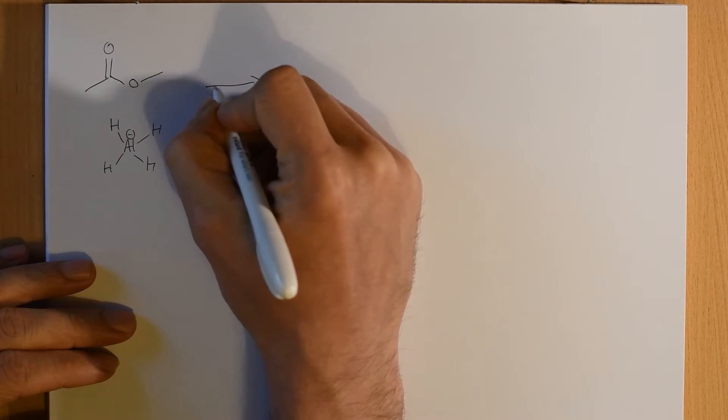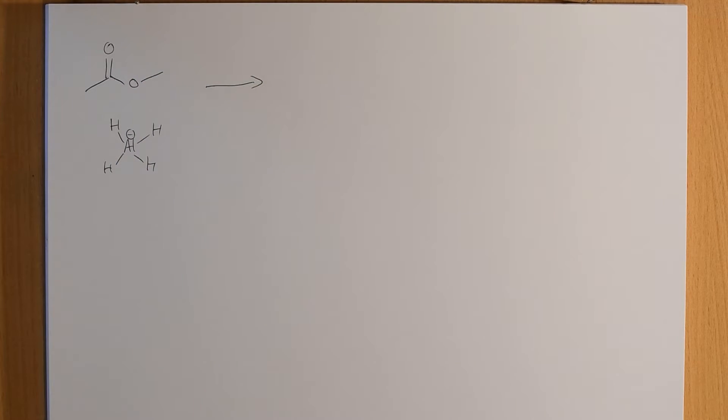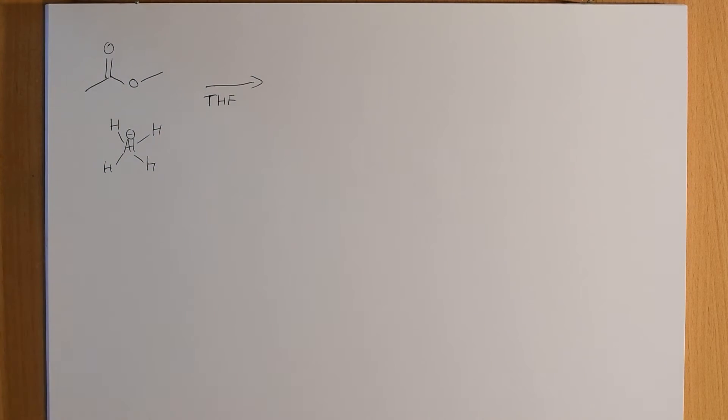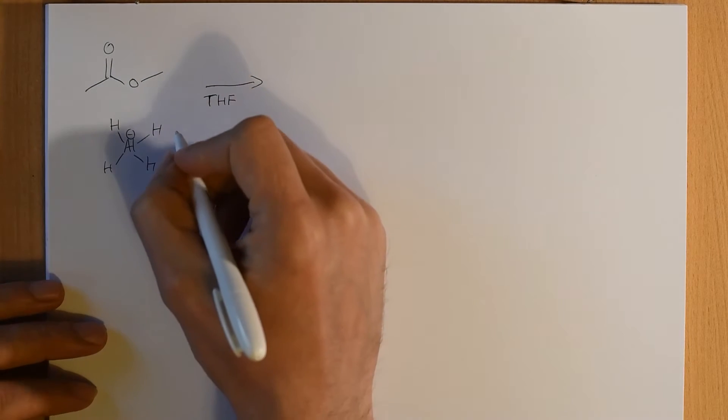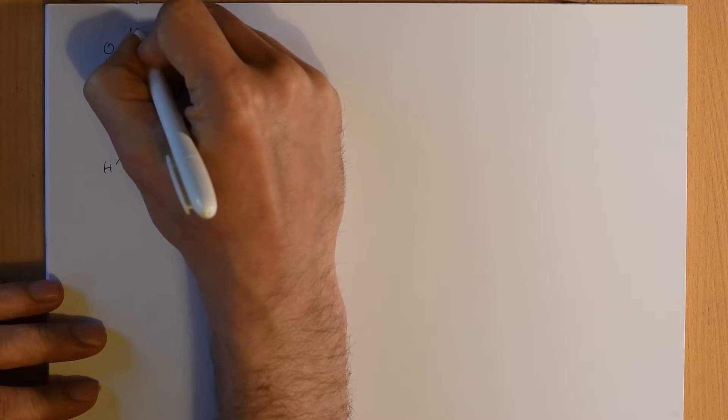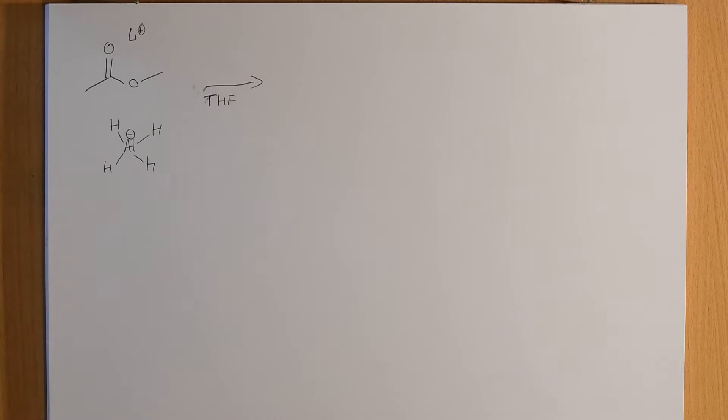In this case, when we do our reaction, we're going to do it in some non-protic solvent. So, some solvent that can't react with these really reactive hydrides. So, it might be done in THF or something like that. But it's going to be done in some non-reactive solvent. So, our lithium spectator ion is going to be around as well.